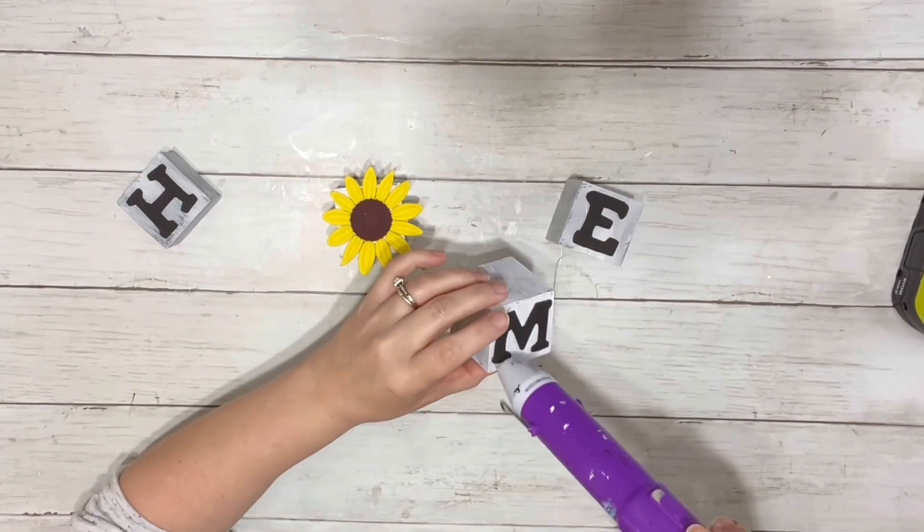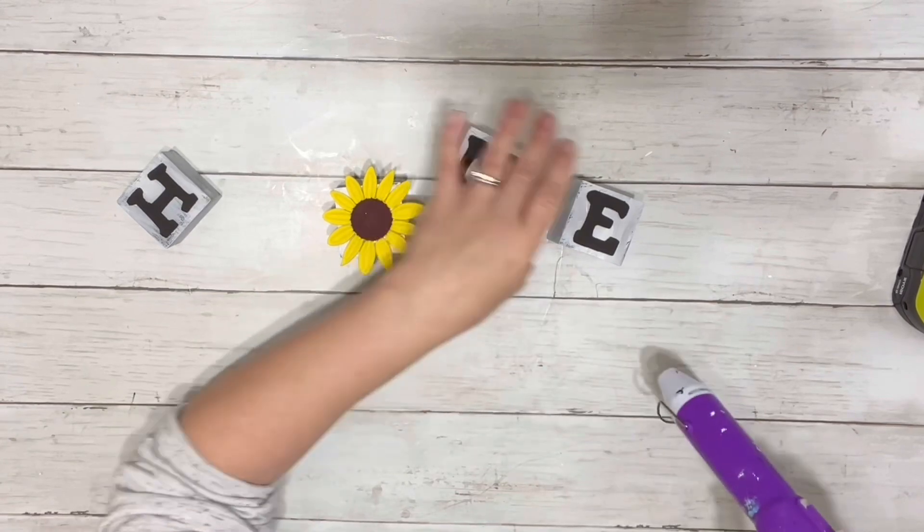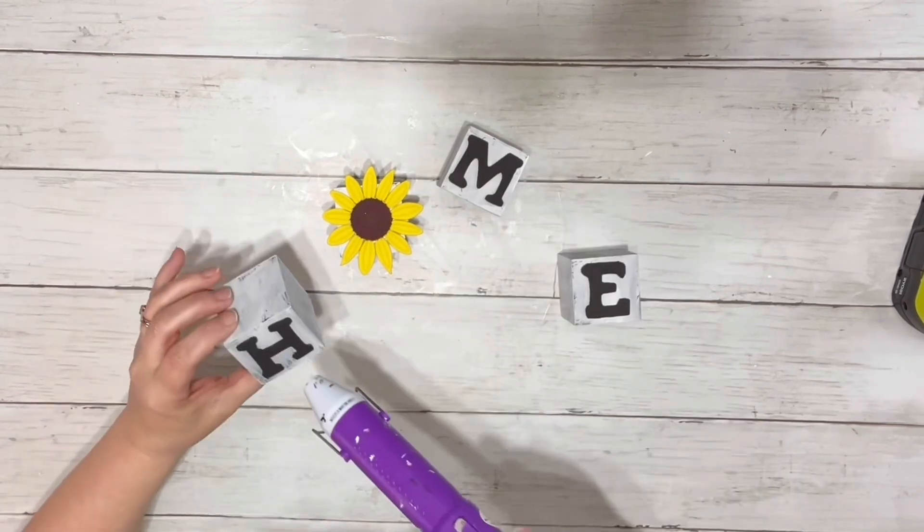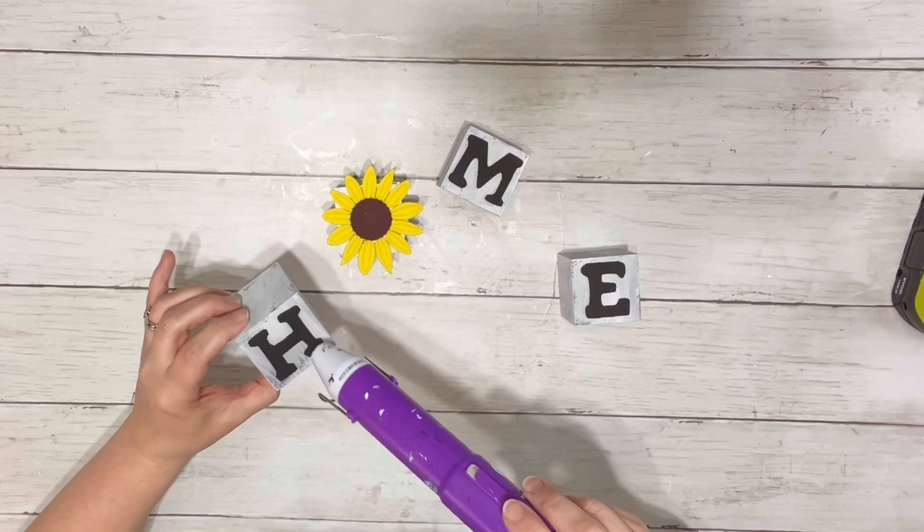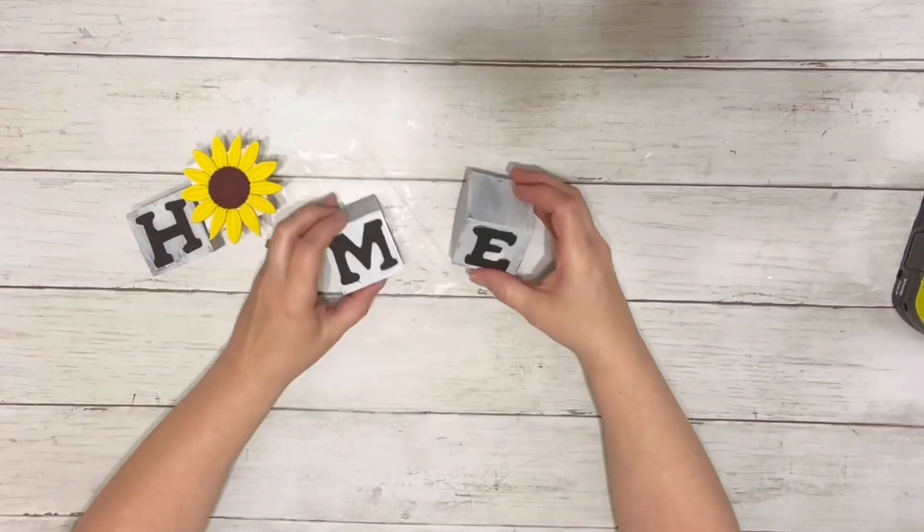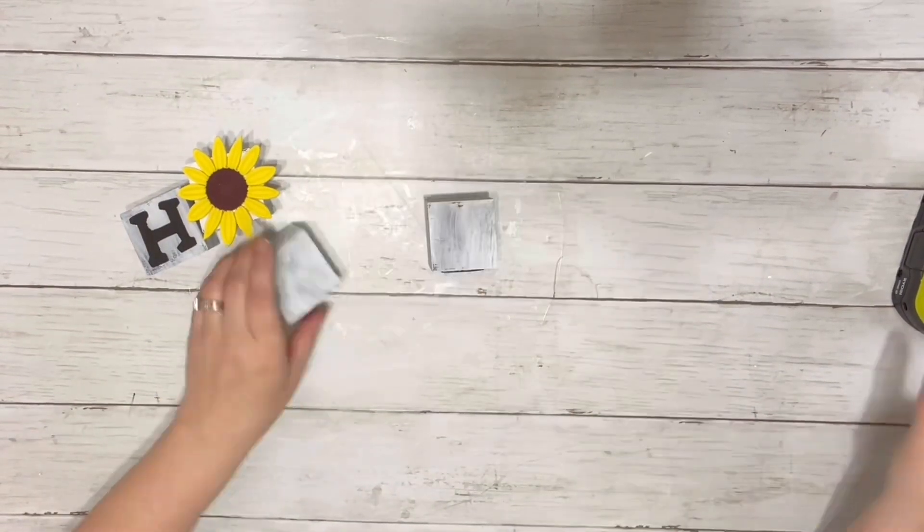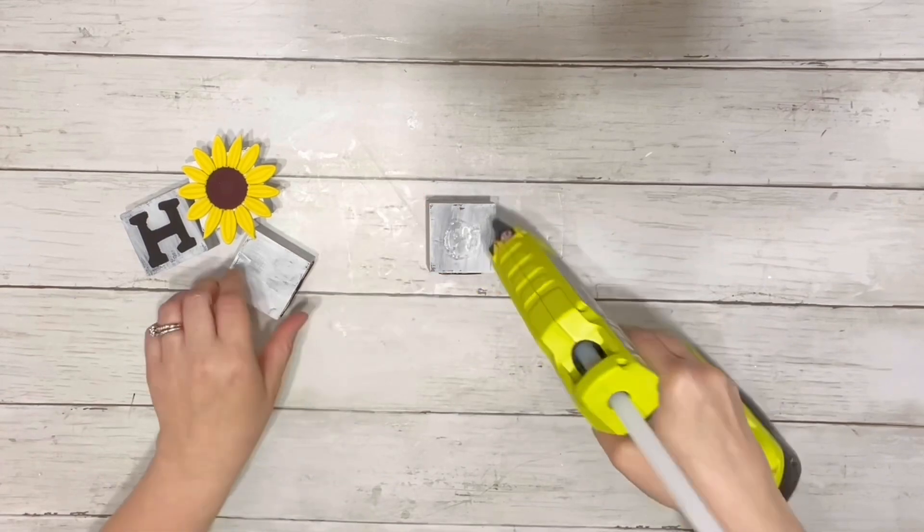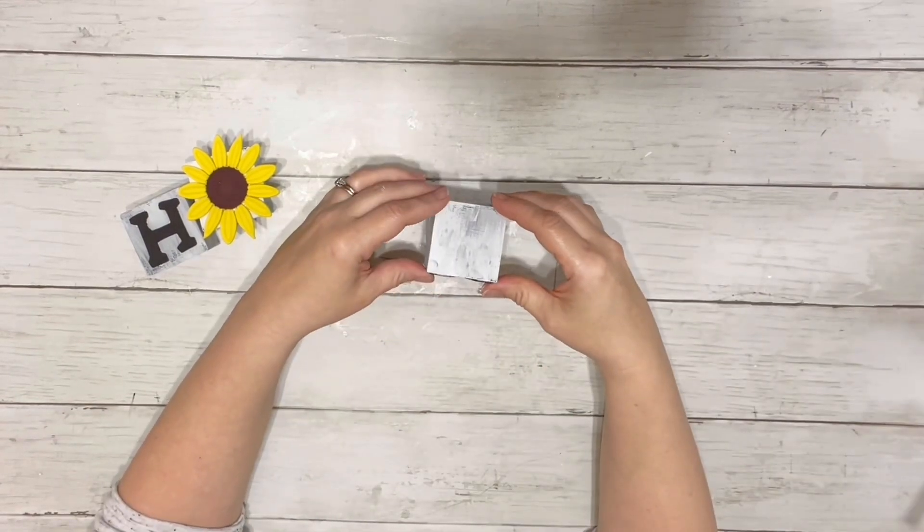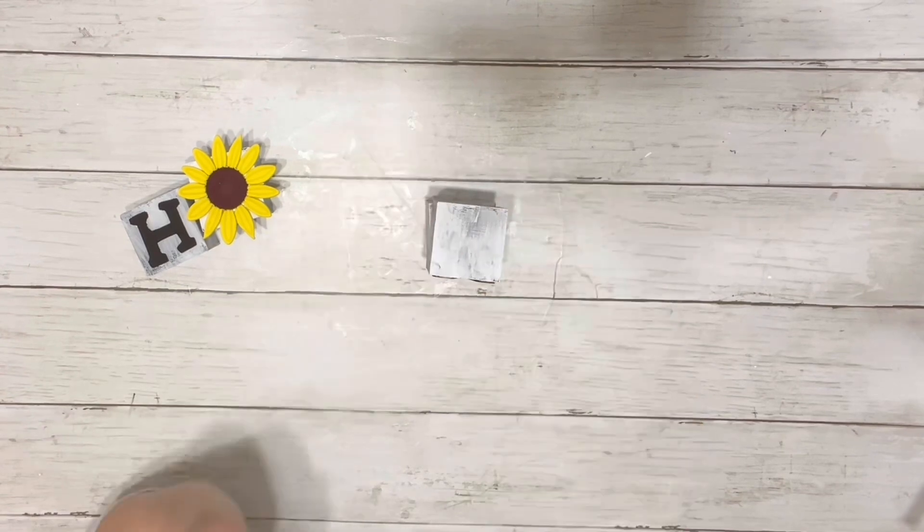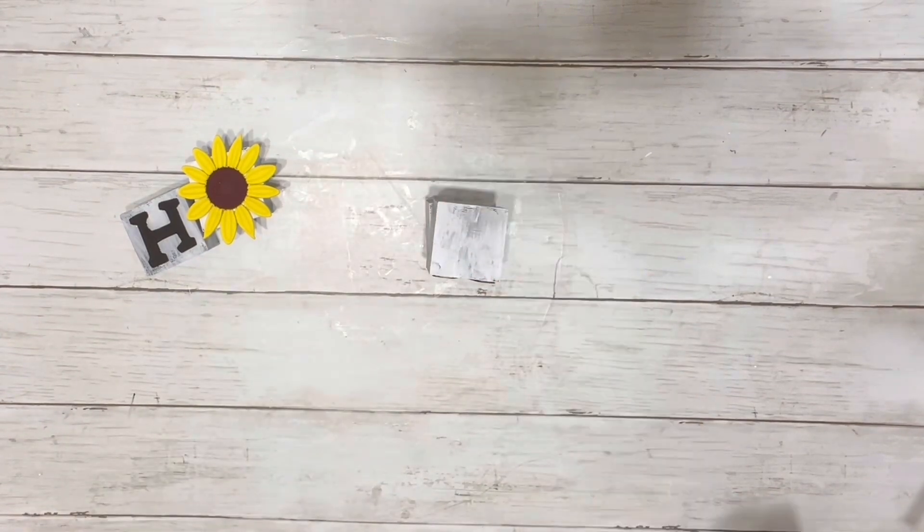To get off the little stringy hot glue lines, I used my heating tool to get rid of those. It just melts them away. After everything was put together, I stacked them on top of each other using hot glue and kind of offset each one as I went up.